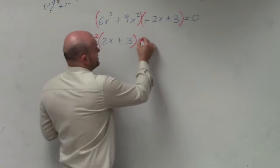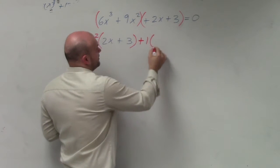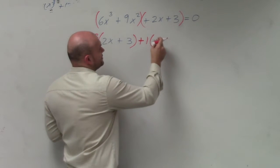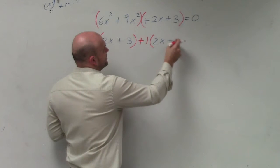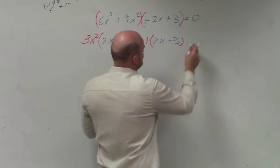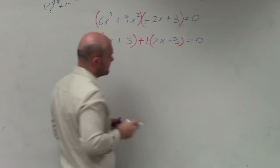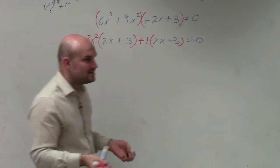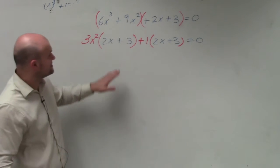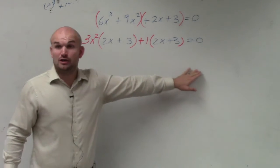So what you can do is you can factor out a positive 1. If you factor out a positive 1, you're left with 2x plus 3, parentheses, equals 0. So the whole reason why we did that is because now you guys can see, what do they have in common? Their color is blue.